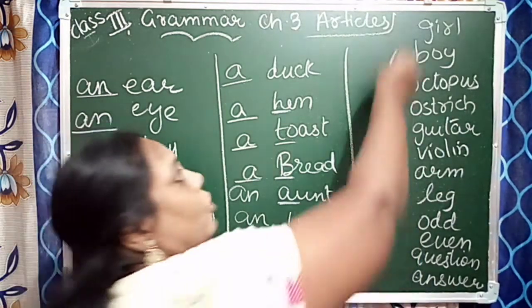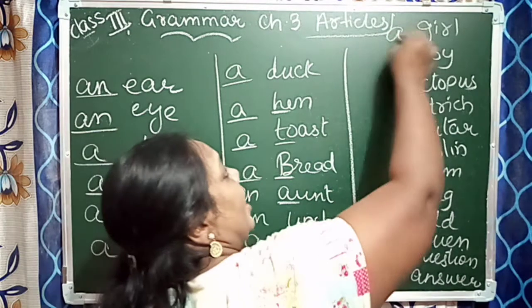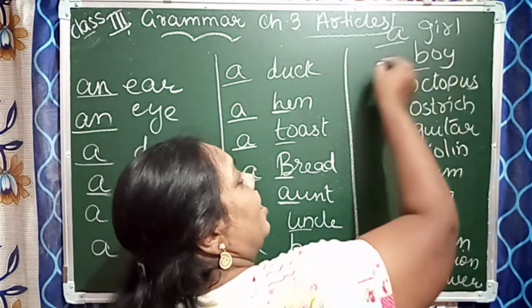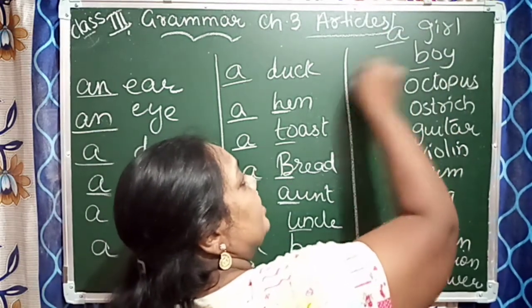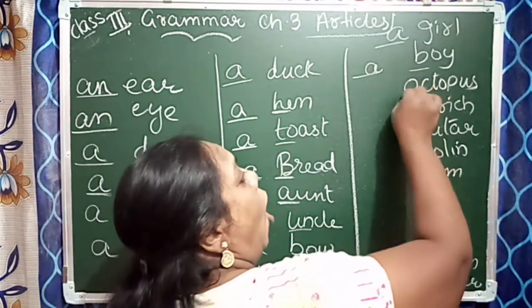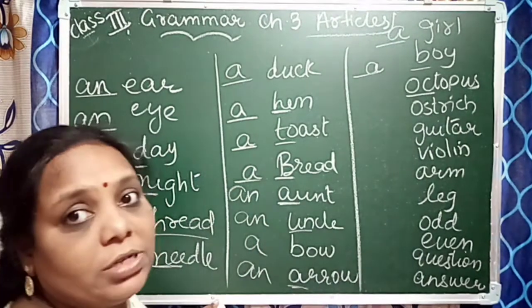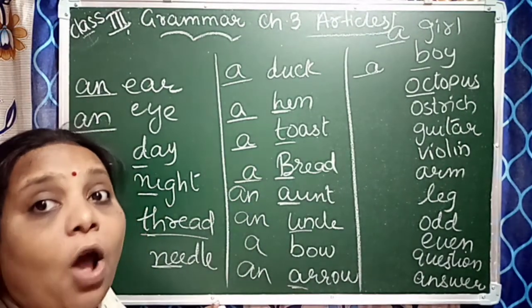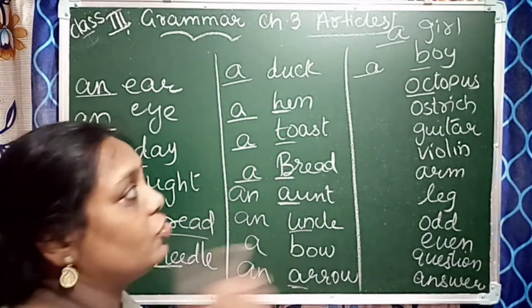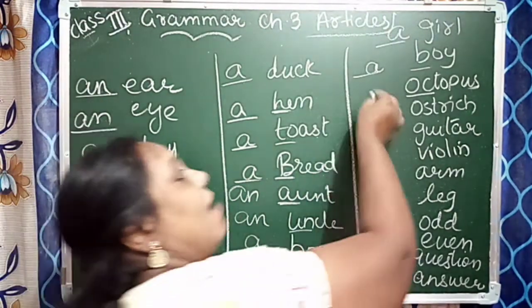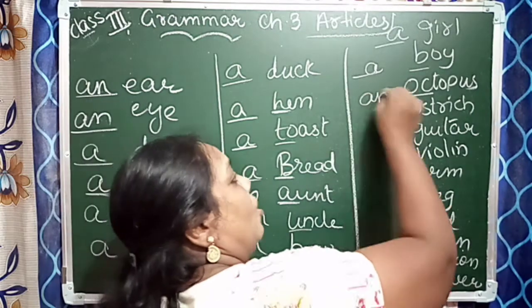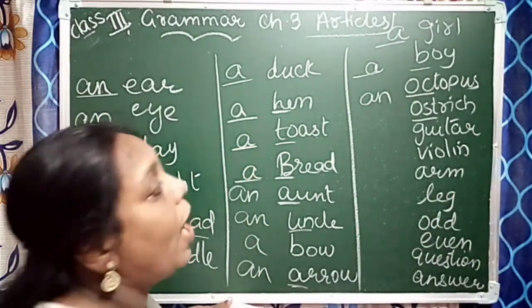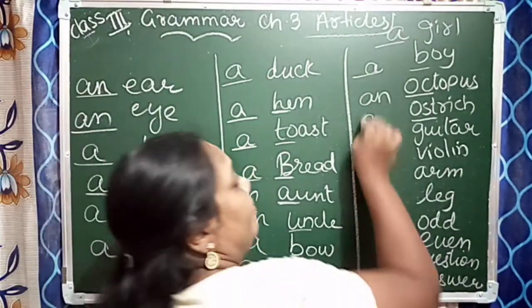Girl — G is a consonant, so 'a'. Boy — B is a consonant, so 'a'. Octopus — O sound is coming, O is a vowel sound, so 'an' we will write. Ostrich — O, so 'an' will come.